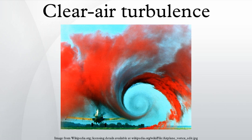In the journal Nature Climate Change, Paul Williams of the University of Reading and Manoj Joshi of the University of East Anglia reported moderate to severe transatlantic turbulence would be 40–170% more frequent in a world that had twice as much atmospheric carbon dioxide as pre-industrial times did.